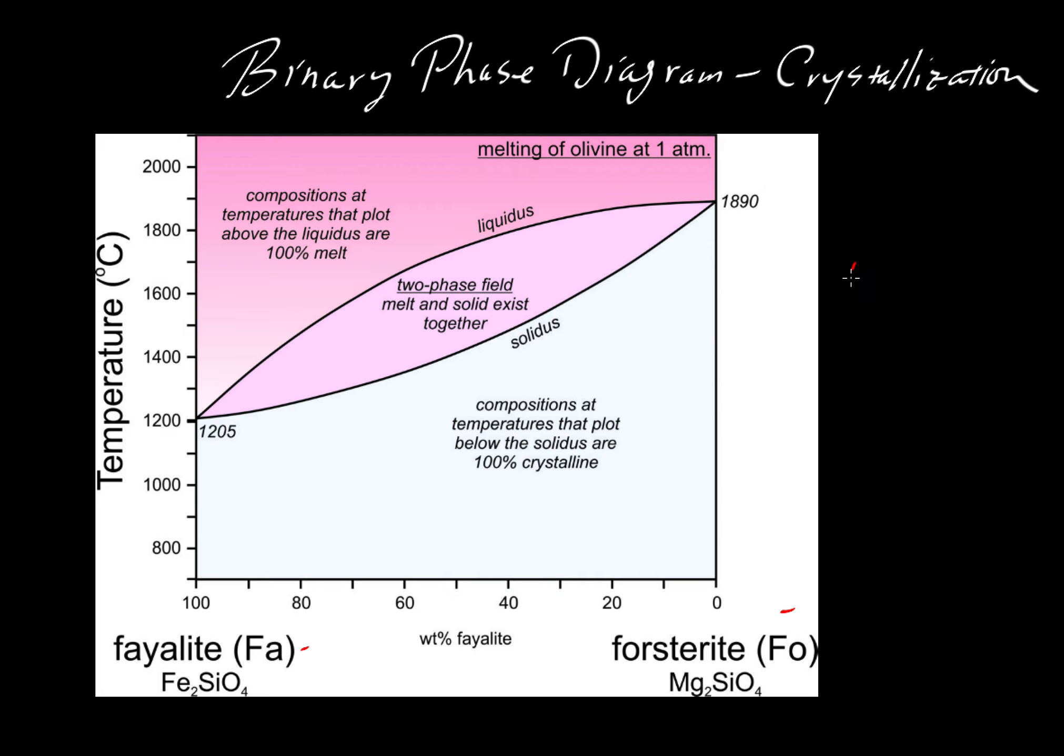Let's say we have a bulk composition, we'll call it BC, and that bulk composition has a composition of 20% fayalite and 80% forsterite. Where would it plot on this curve?